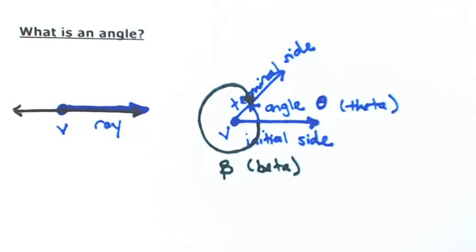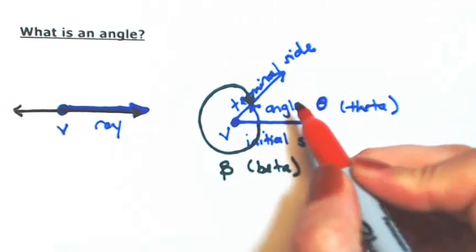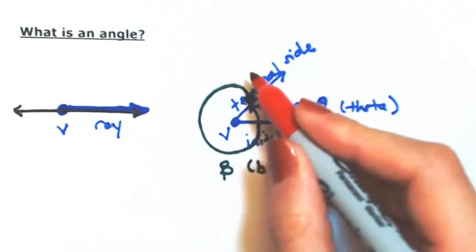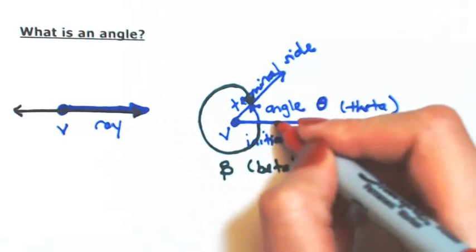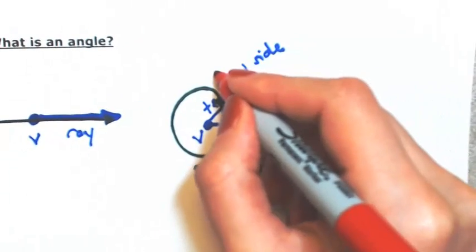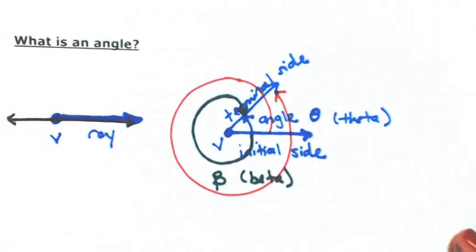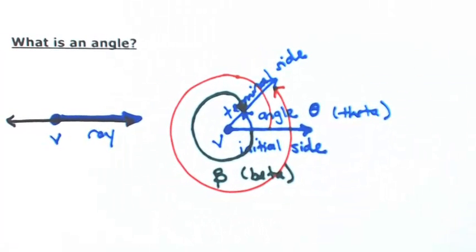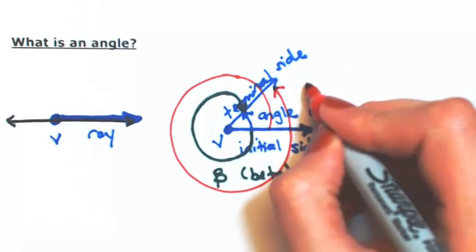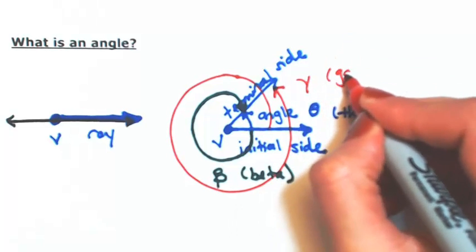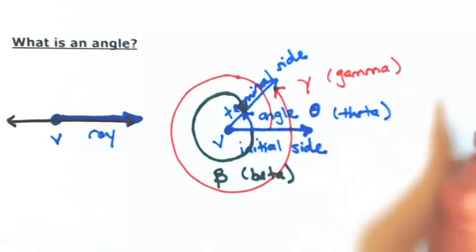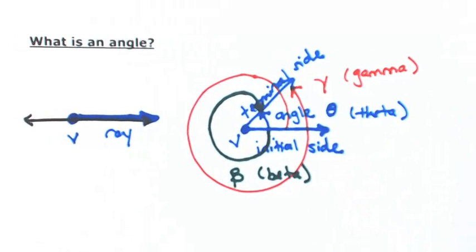Use a second angle, still starting from that initial side, and I'm going to go all the way around and then end at the terminal side. That's also an angle. Let's call that gamma. So from the initial side to the terminal side, there's actually many ways to define an angle. So what we're going to do is use what's called the standard position of an angle.